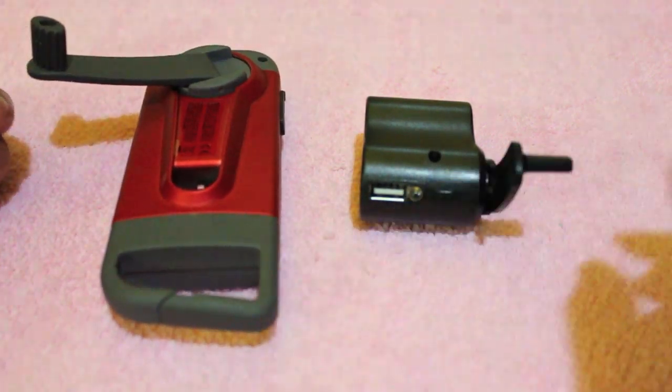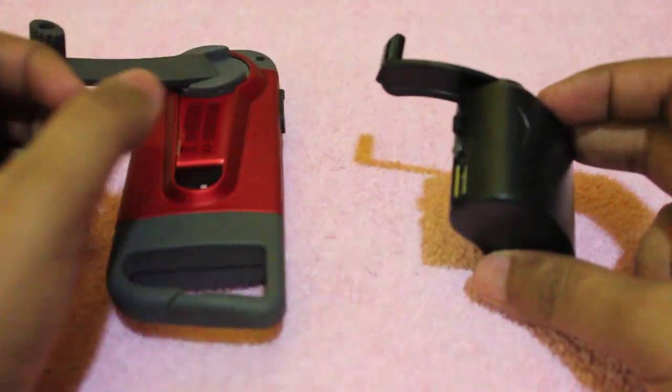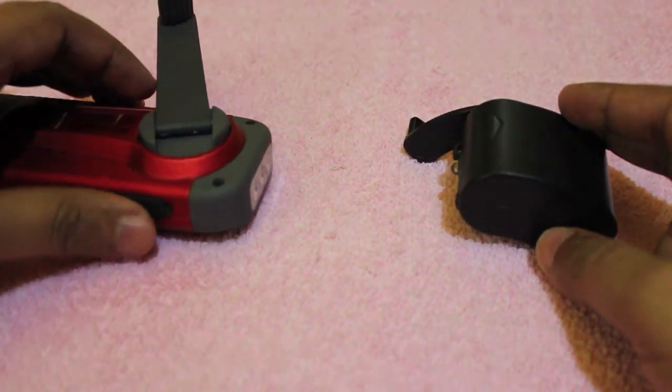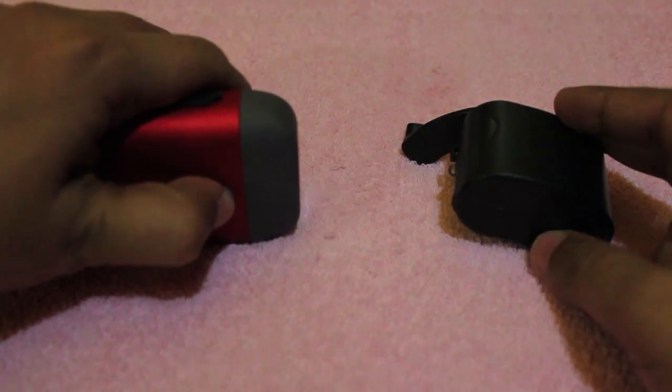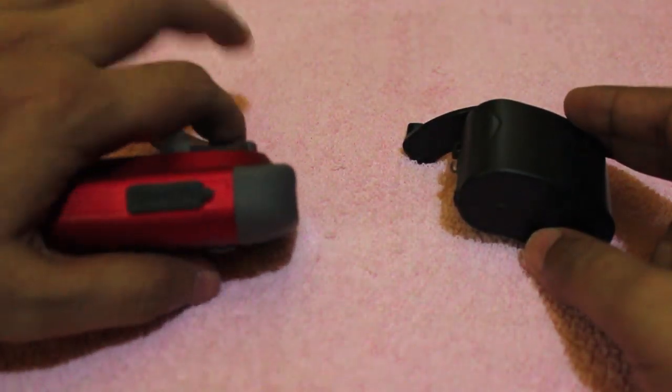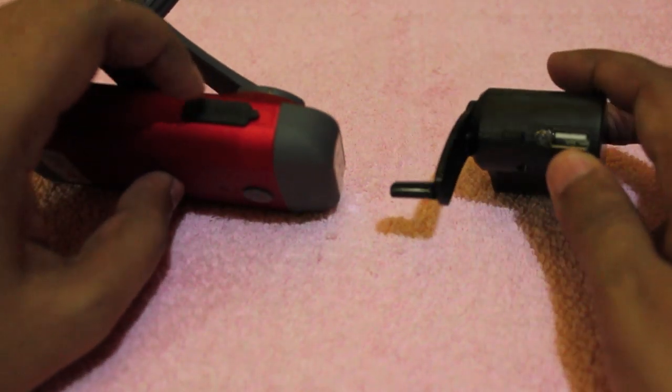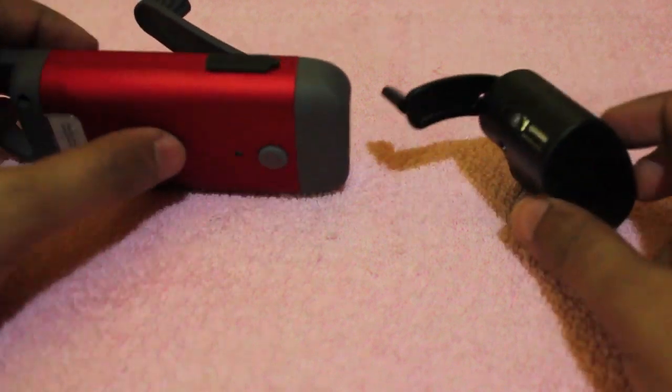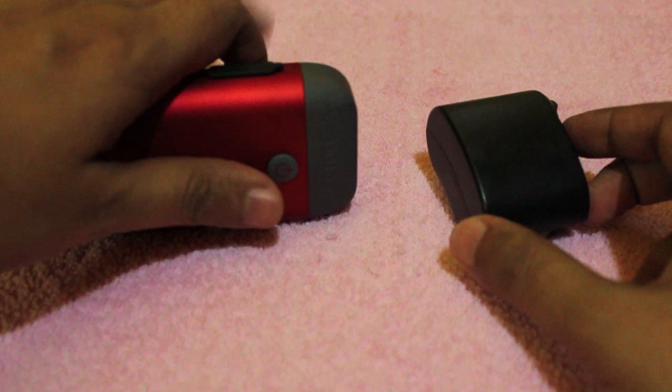The unbranded one has very limited capacity. It can only charge basic MP3 players or basic phones, whereas the Eton charger comes with a flashlight and can charge even smartphones. Both of them charge via USB.